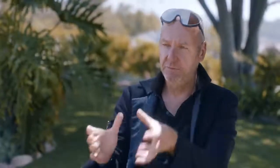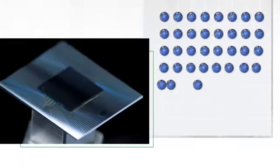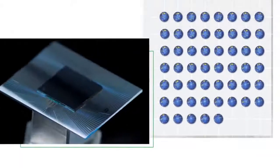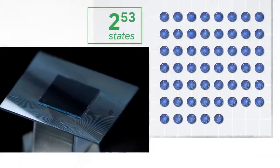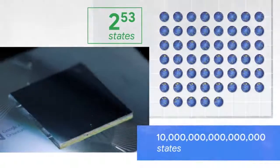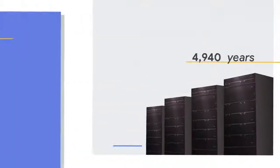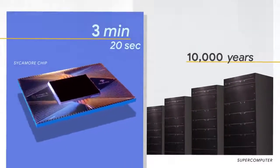The processor that achieved quantum supremacy is called the Sycamore processor. It's parallel processing 2 to the 53 states, which is 10 million billion — and that enormous amount of parallel processing is what gives it the power. When we run small chunks of the computation, it outpaces the largest supercomputer in the world. Our estimate is that it will take thousands of years for a classical computer to complete the full computation.